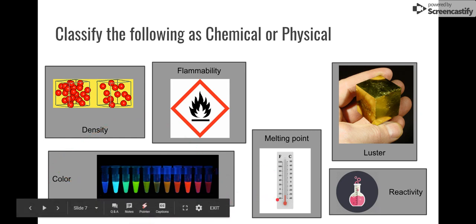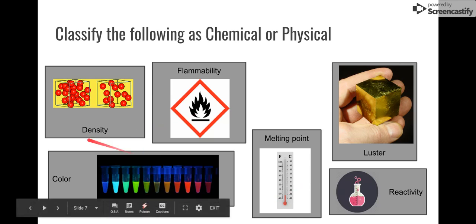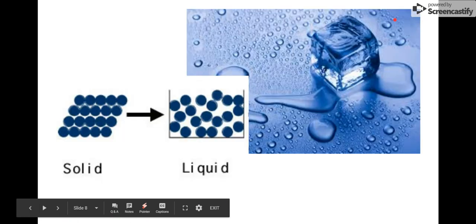The last one's challenging, color change. So if you have a color change, that's a physical property. You're just describing the physical characteristics of what it looks like. However, a lot of color changes happen because of chemical reactions. So it's a little bit of a gray line, but the color change in this instance is going to be a physical property.